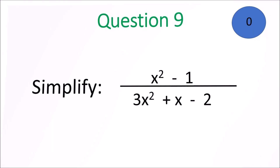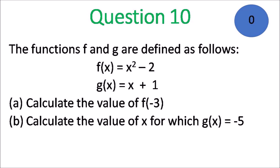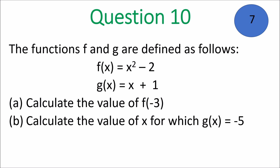And here we go, question 10. The functions f and g are defined as follows: f of x is equal to x squared minus 2, and g of x is x plus 1. (a) Calculate the value of f of negative 3, and (b) calculate the value of x for which g of x equals negative 5. Go ahead, get cracking. You need to be able to deal with functions on paper 3 of the BGCSE.